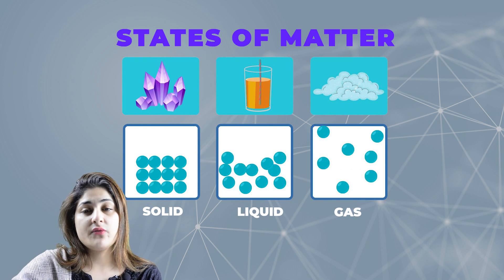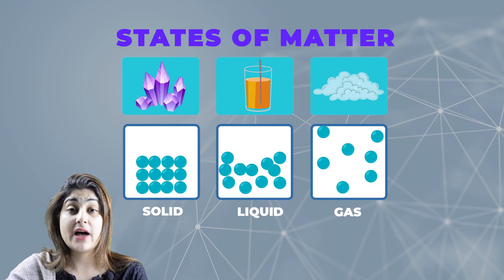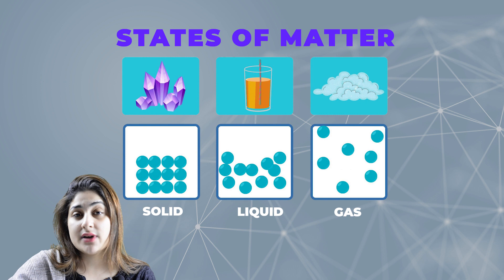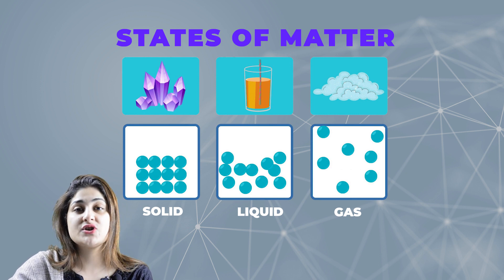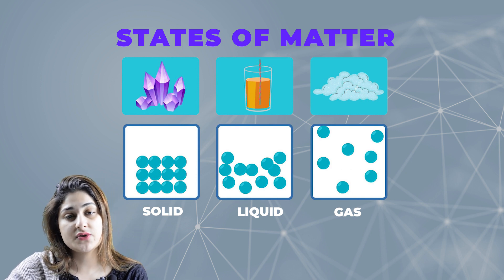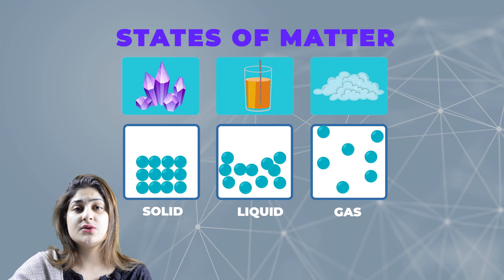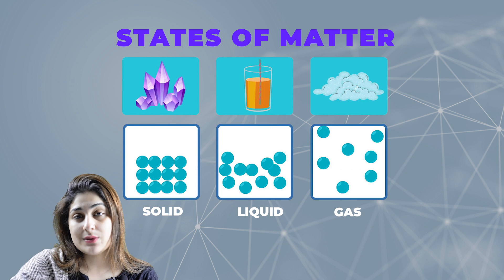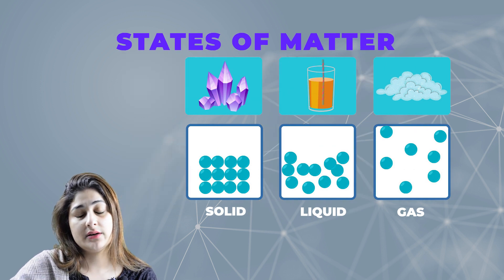If you look at solids around you, you can easily see that different solids have different shapes, and it's really difficult to accommodate a larger piece of solid into a smaller container. That's because of the rigid shape, which is due to the molecular arrangements of solids. Liquids tend to take the shape of the container we pour them into, which is completely due to the arrangement of molecules in liquids. We've already discussed how the molecular arrangement in gases works.